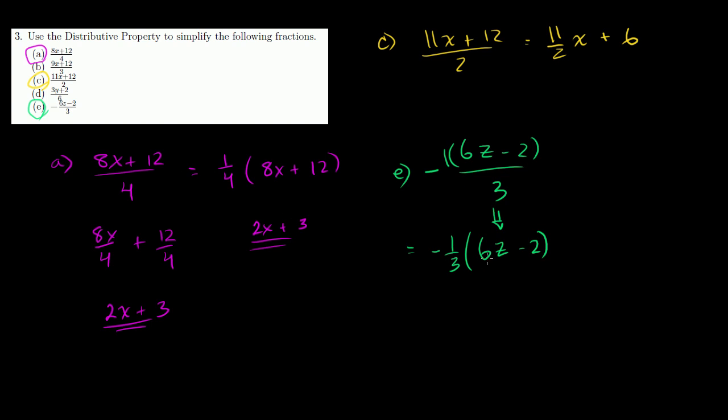And then you just do the distributive property. Negative 1 third times 6z is going to be minus 2z. And then negative 1 third times negative 2, negatives cancel out, you get plus 2 thirds. And you are done.